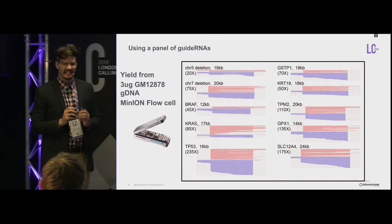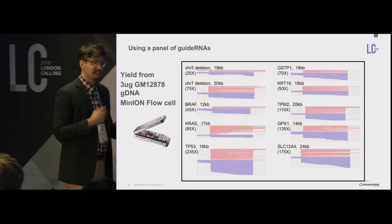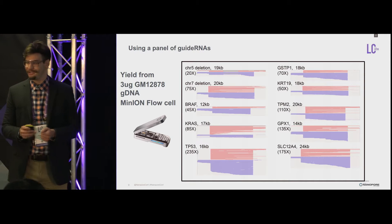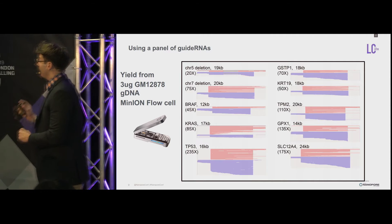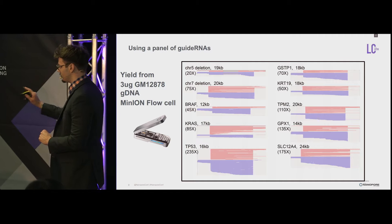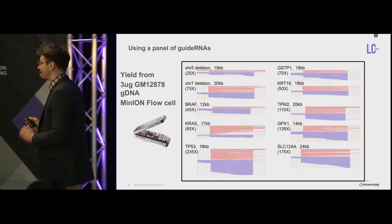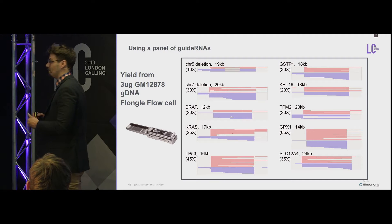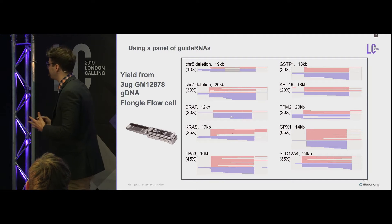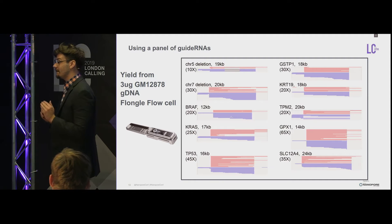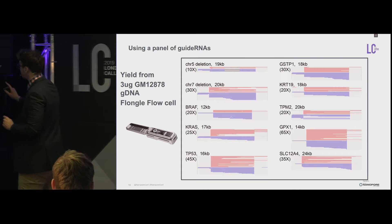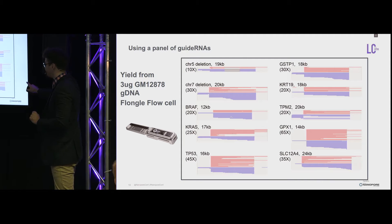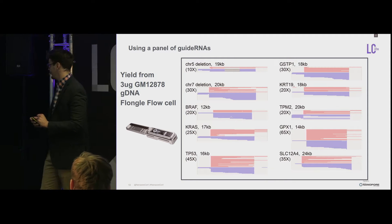We use the GM12878 cell line because it's really well characterized, so we can confirm any single nucleotide changes as well as structural variations. We also performed similar studies on a Flongal flow cell. Even from this tiny flow cell where we generate a lot less sequencing data, we can still generate a substantial amount of coverage — ranging from a lowest of 10X at chromosome 5 up to 65X at the GPX1 gene.